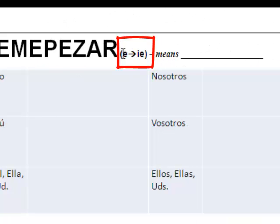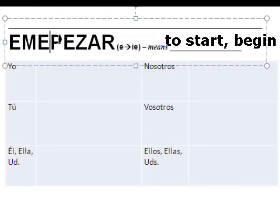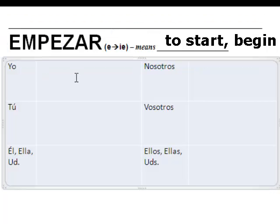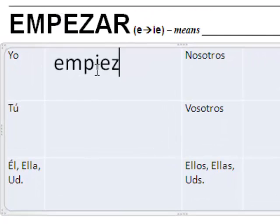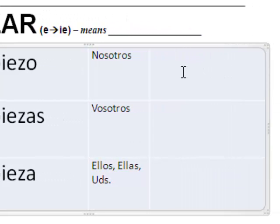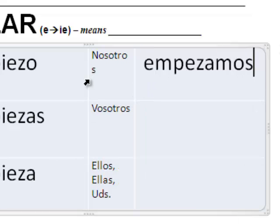Next: empezar. It's an e to ie stem changer. Yo — I start: empiezo. Tú — empiezas. Y si usted — empieza. Nosotros — we don't do stem changing in the nosotros. Remember that. Empezamos.